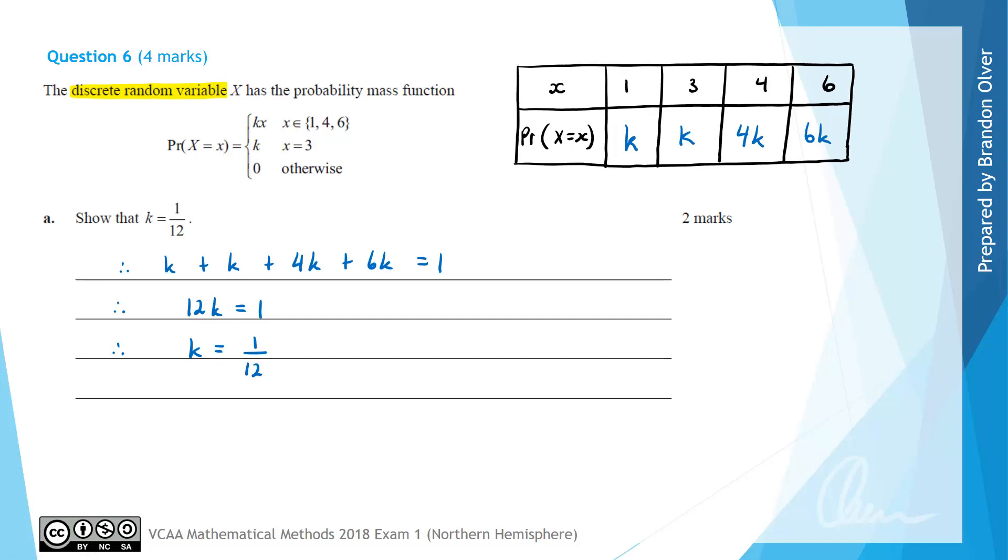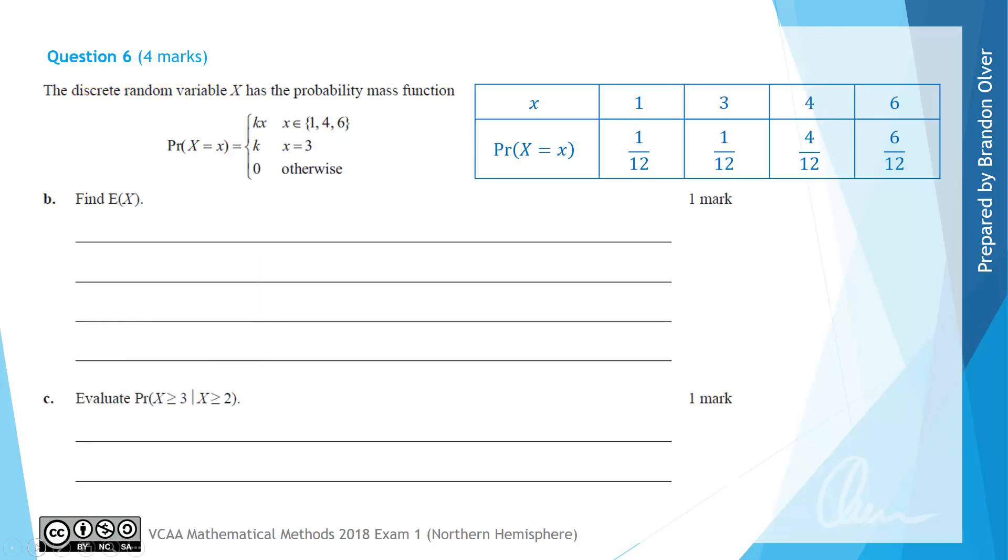So now that we know that k is 1 over 12, this would simply be 1 over 12. This would be 1 over 12. This would be 4 over 12. And 6 times 1 over 12 is 6 over 12. So they would be the 4 probabilities that we need to work with.